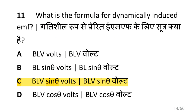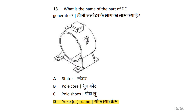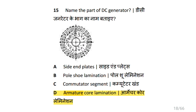What is the formula for dynamically induced EMF? That is BLV sin theta. Which rule is used to find the direction of magnetic field? That is Fleming's right-hand rule. What is the name of the part of DC generator shown? That is yoke or frame. How many parallel paths are there in duplex lap winding of a 4-pole DC generator? That is 8. What is the name of the part of the DC generator? That is armature core lamination.